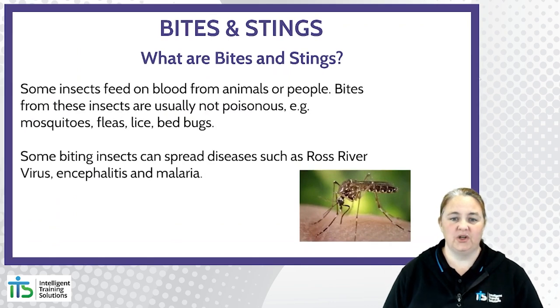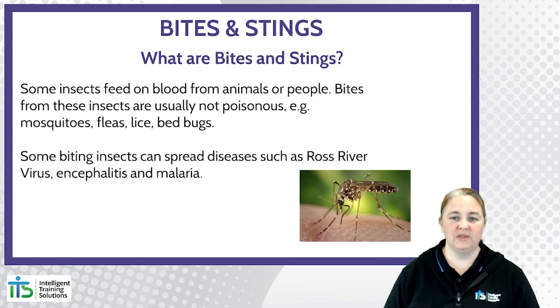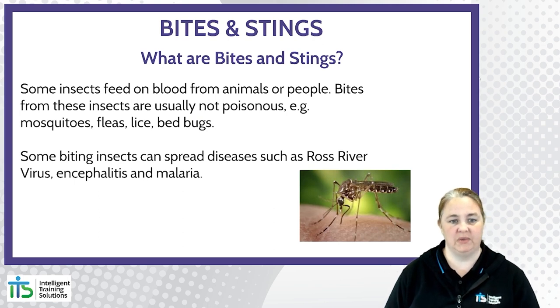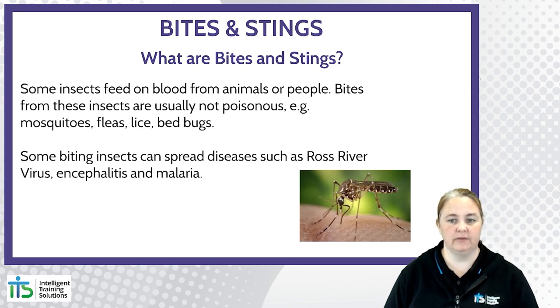Some insects feed on blood from animals or people. Bites from these insects are usually not poisonous — mosquitoes, fleas, lice, bedbugs. However, some biting insects can spread diseases such as Ross River virus, encephalitis and malaria.